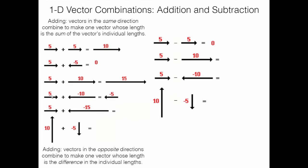It's just like adding integers. For 5 plus −15, the difference is 10 and it points left because the larger vector is −15. For a vector of 10 upward plus −5 downward, the difference is 5 and it points up because the magnitude-10 vector is larger.